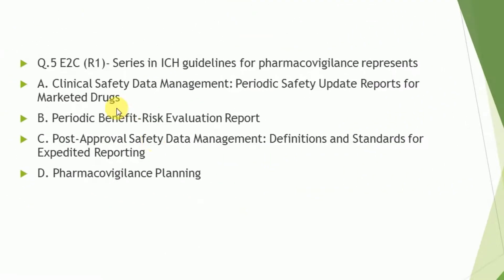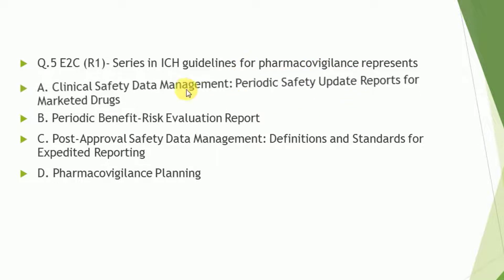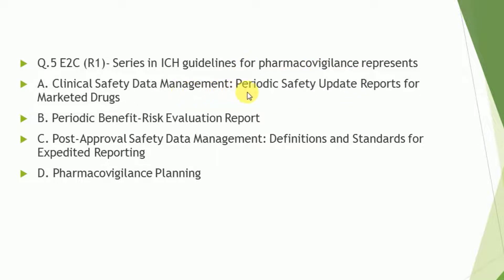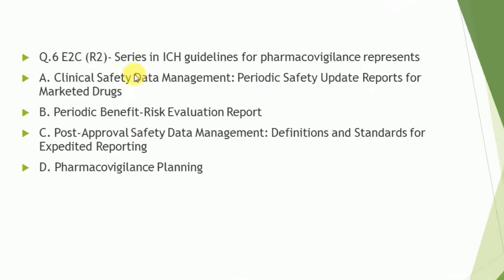reports. Question number 5: what does the E2C R1 series in ICH guideline for pharmacovigilance represent? The correct answer is: clinical safety data management — periodic safety update reports for marketed drugs. Question number 6: what does the E2C R2 series in ICH guideline